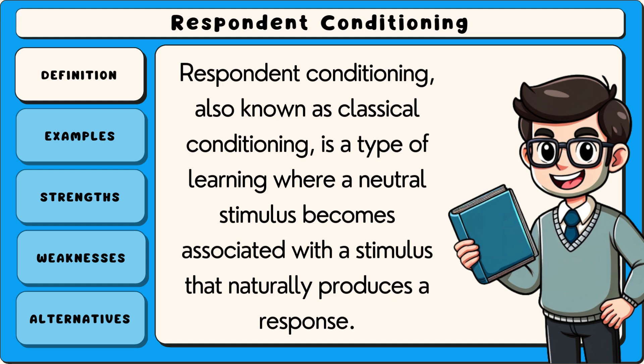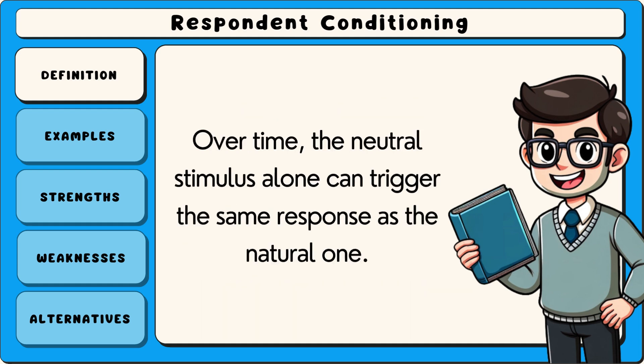Respondent conditioning, also known as classical conditioning, is a type of learning where a neutral stimulus becomes associated with a stimulus that naturally produces a response. Over time, the neutral stimulus alone can trigger the same response as the natural one.